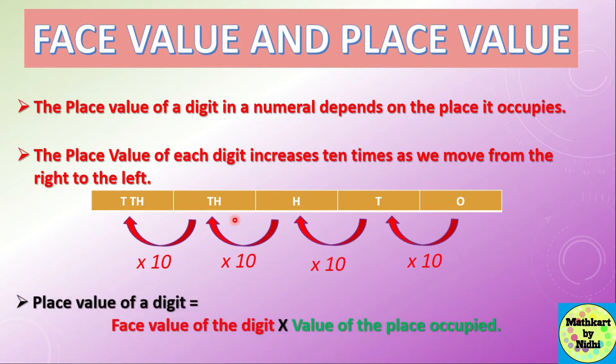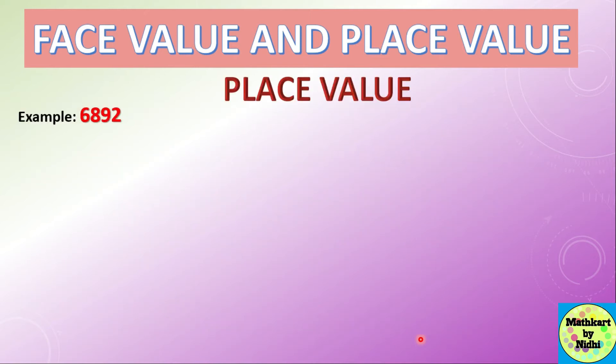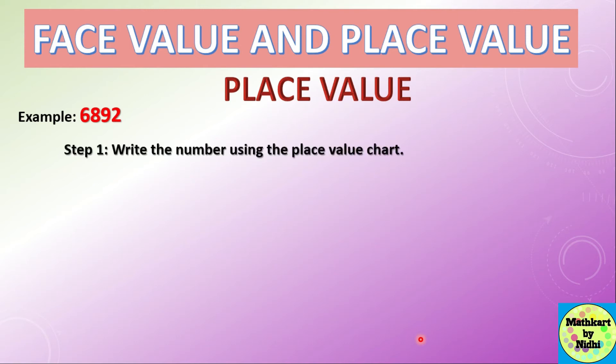To find the place value of a digit, multiply the face value of the digit by the value of the place it occupies. Let us understand this with a few examples. For 6892, the first step is to write the number using a place value chart.